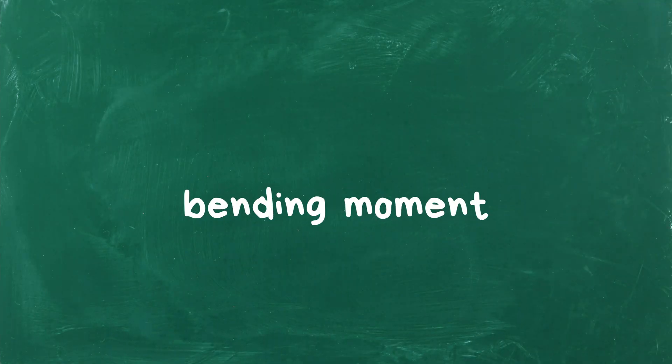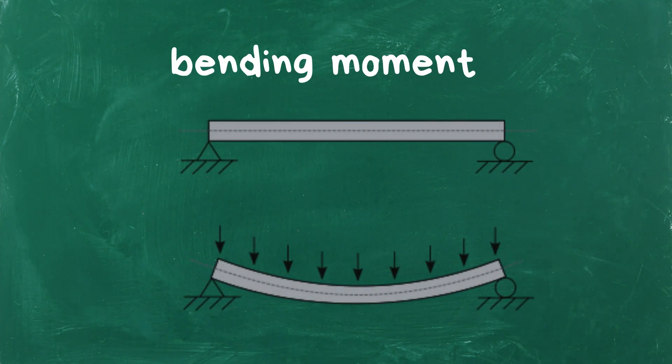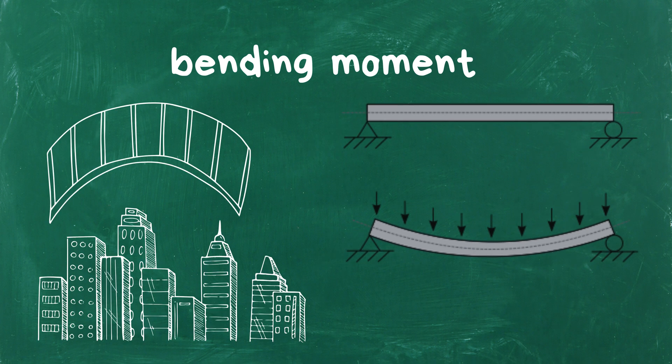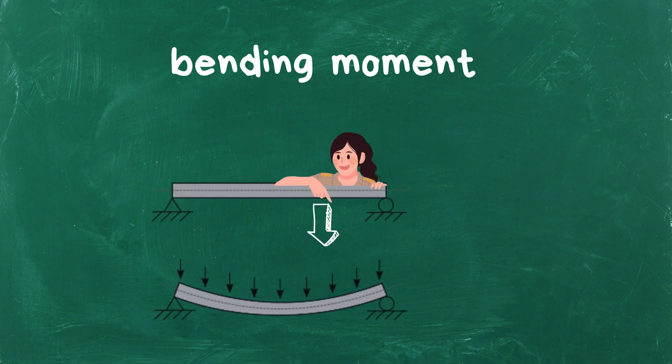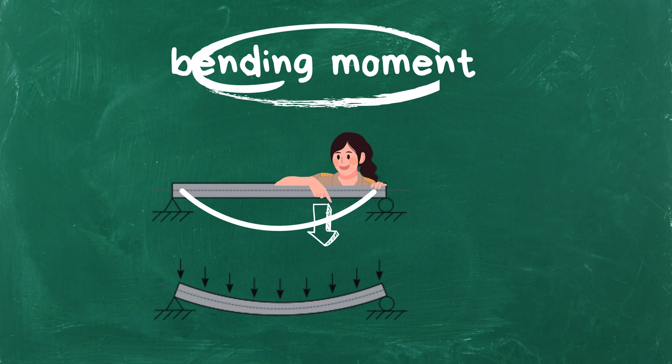Well, let's start with bending moment. Imagine a beam, like the ones we use in bridges and buildings. When a load is applied to the beam, it creates a bending moment. Think of it like this: when you push down on one end of the beam, the opposite end experiences a bending force. This force is what we call the bending moment.